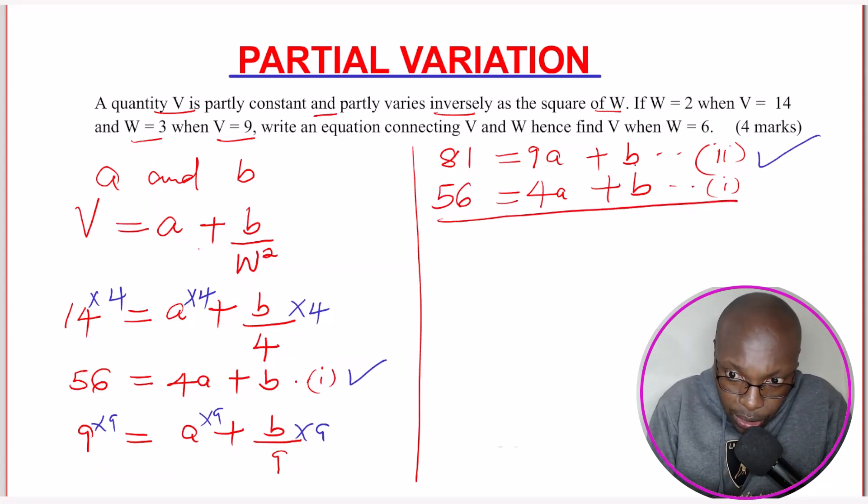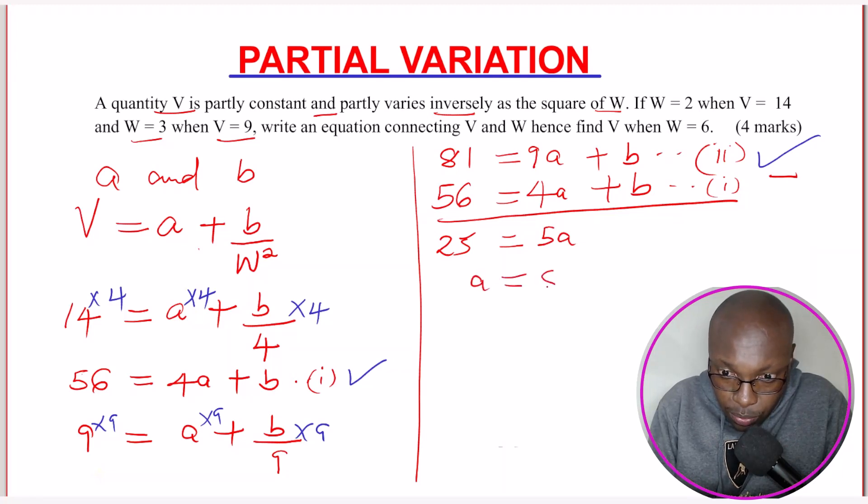You can see B is uniform. So to eliminate B, I will subtract. So 81 subtract 56, this will give 25. This equals to 9A subtract 4A, you get 5A. Then B minus B is 0. So A will be 5. That is the first constant.